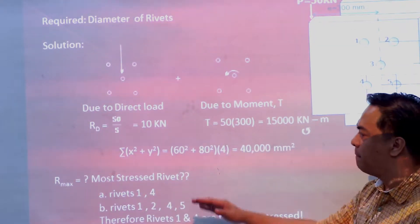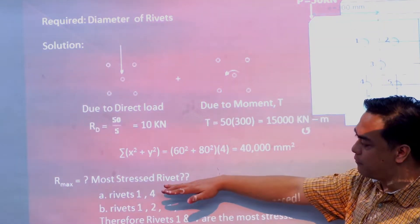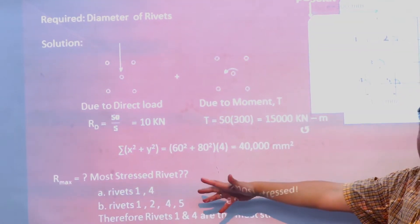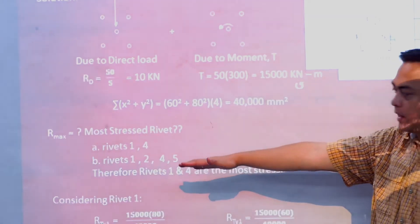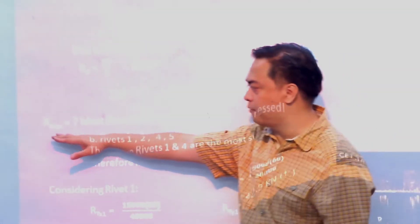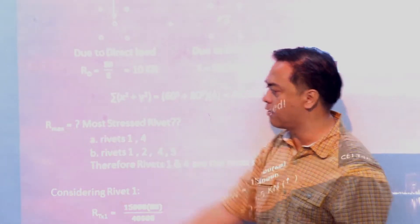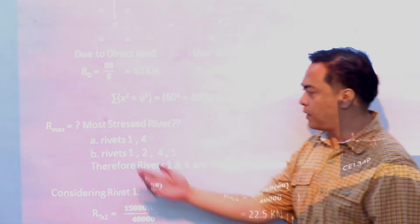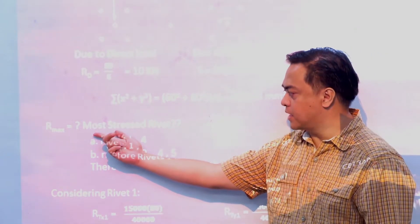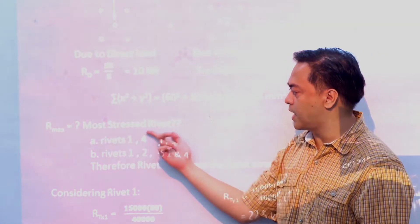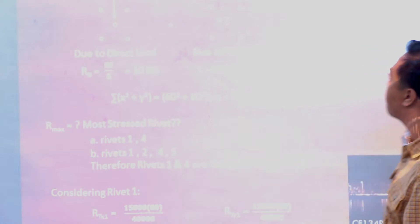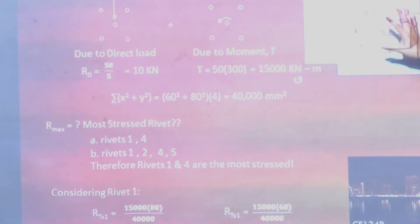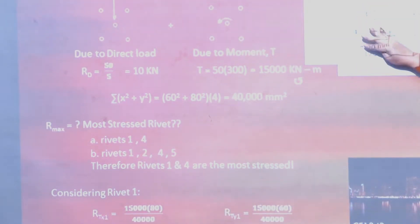Since we are designing for the diameter, we need to identify which rivet experiences the maximum shear force. Among the five rivets, we need to determine which is the most critical.